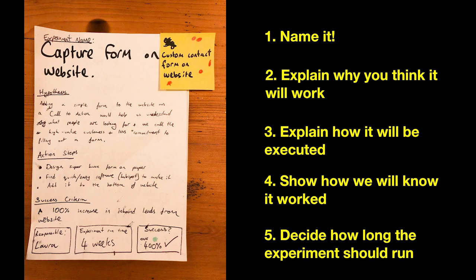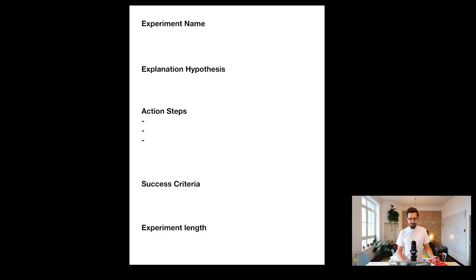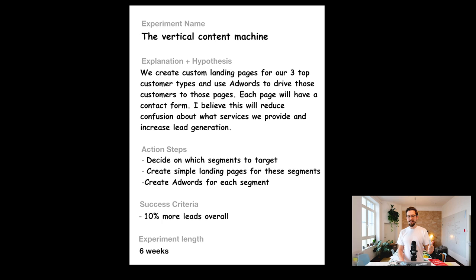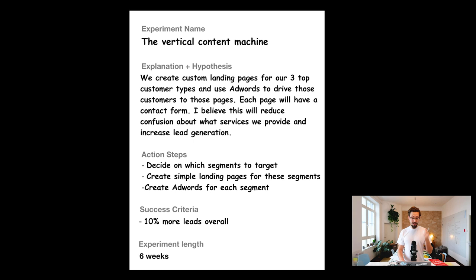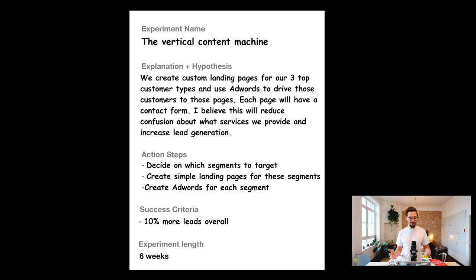A growth experiment looks pretty simple. You give it a name, explain why you think it will work — your hypothesis — explain how it will be executed, show how we'll know it worked, and decide how long the experiment should run. For example: name — the vertical content machine; hypothesis — we create custom landing pages for our top three customer types and use AdWords to drive customers to those pages, each with a contact form, to reduce confusion and increase lead generation; action steps — decide segments, create landing pages, create AdWords; success criteria — 10% more leads overall; experiment length — six weeks.